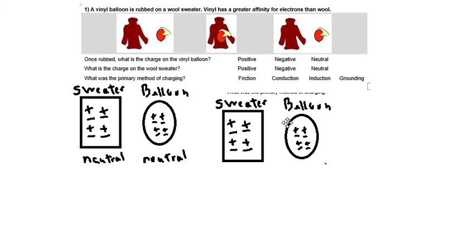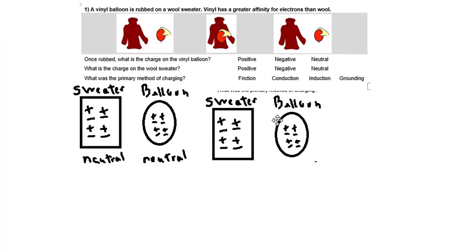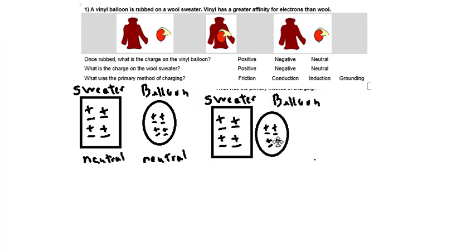Then we're going to take the sweater and balloon and we're going to rub the balloon onto the sweater. And when you rub two different materials, the materials have a different affinity or liking for electrons. And in this case the balloon likes the electrons more than the sweater, and the sweater tends to give off electrons.